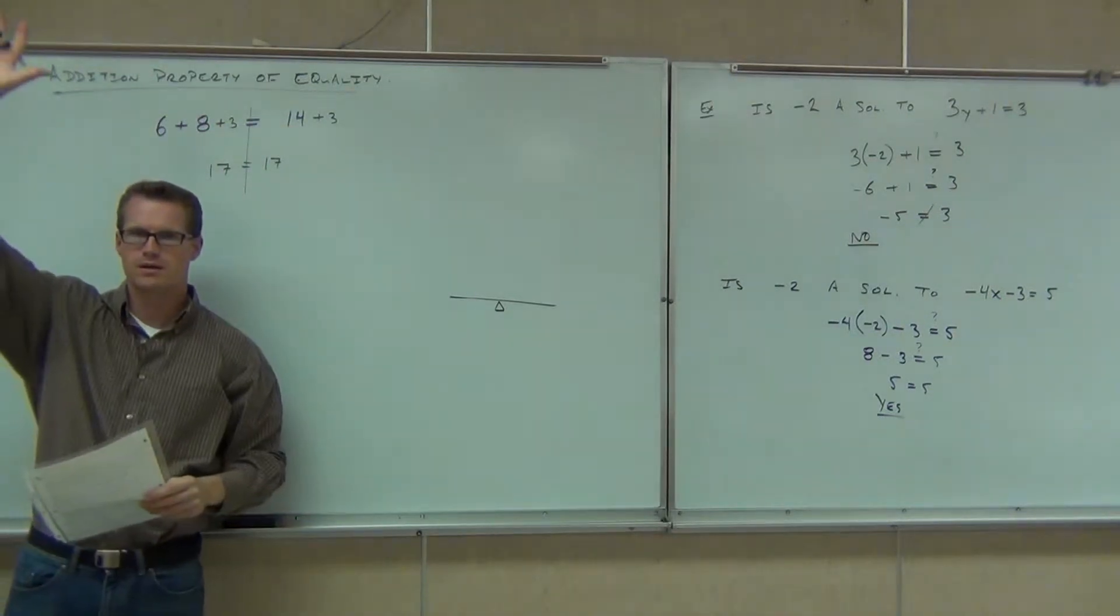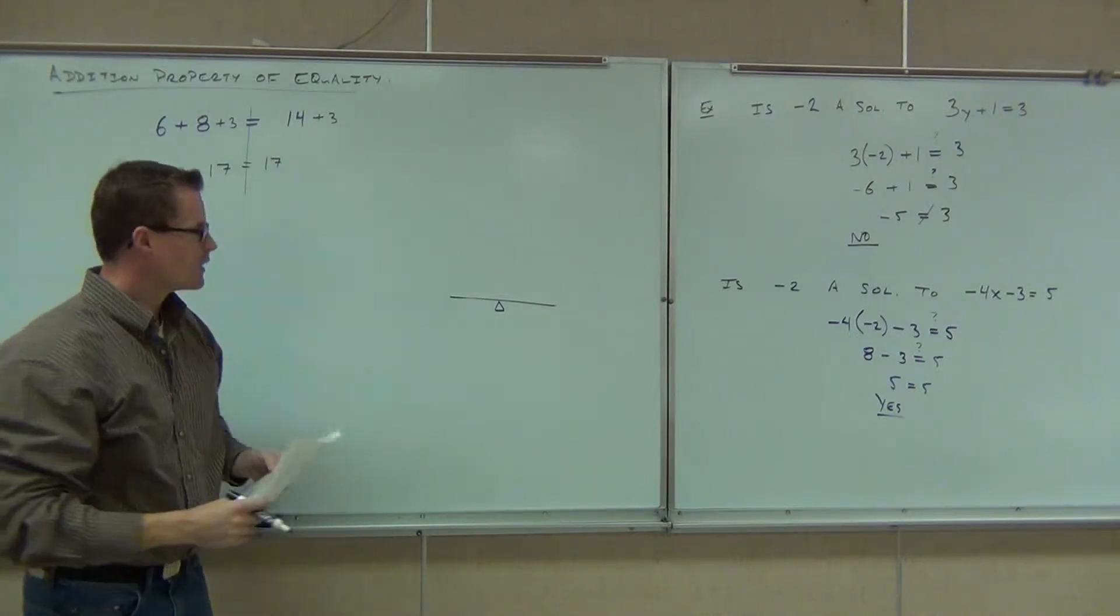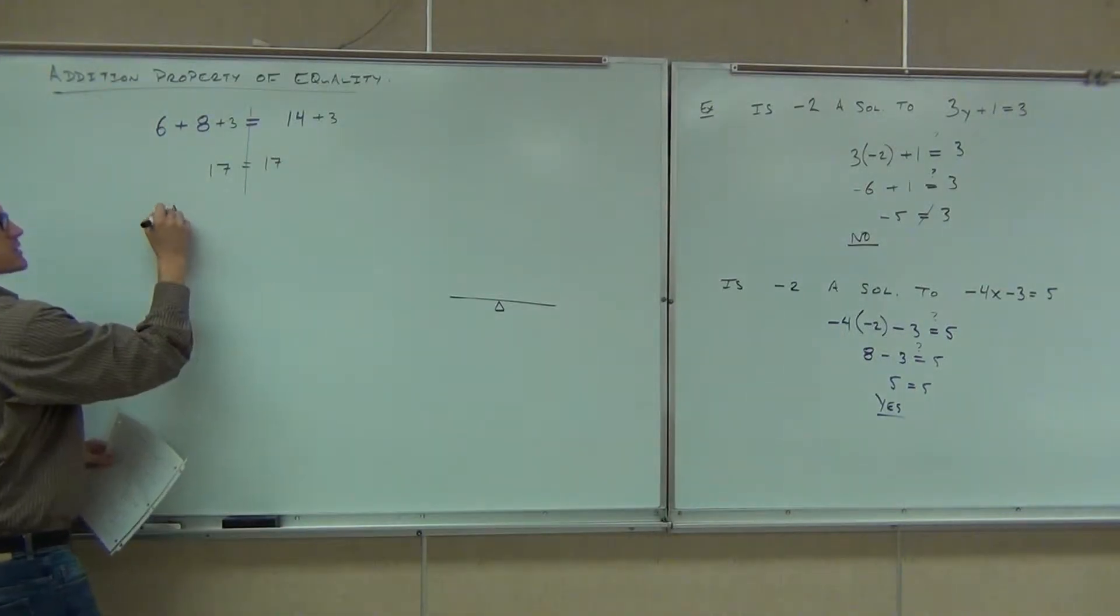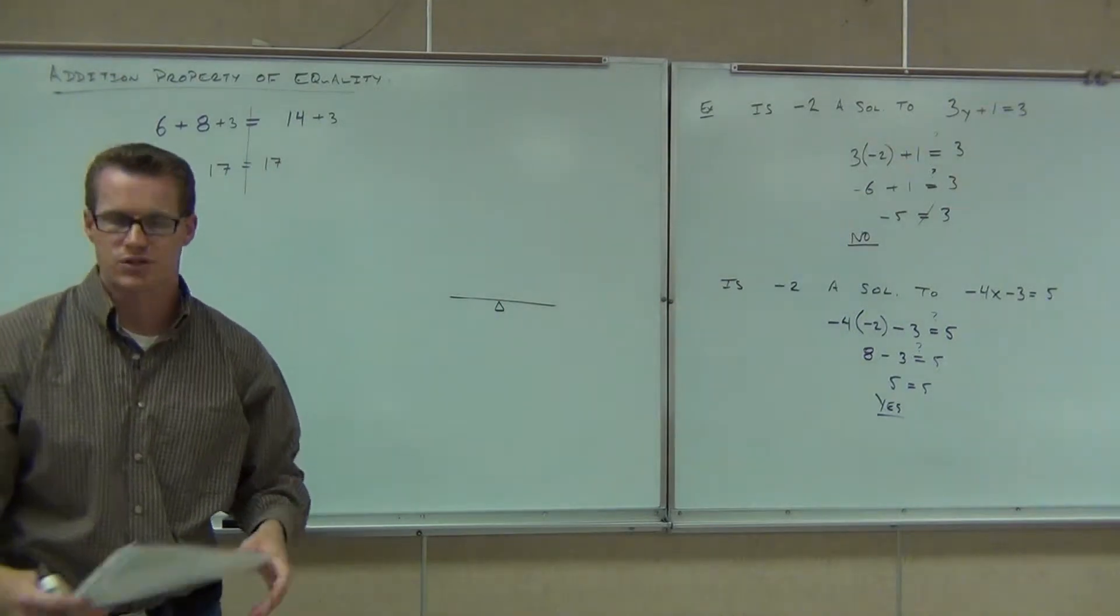How many people are okay with that? Very good. So basically, in layman's terms, what this says is that you can add the same number to both sides of your equation.